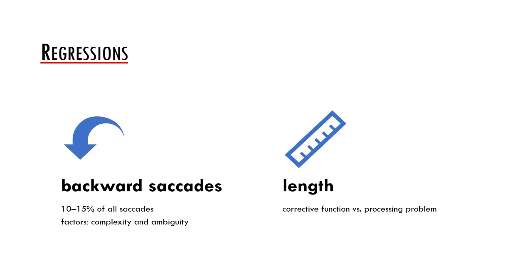Saccades may be either forward or backward. In the research of reading, backward saccades, which are called regressions, are very important. On average, each tenth saccade is a regression, but the frequency may be highly influenced by text complexity and ambiguity.